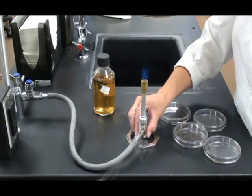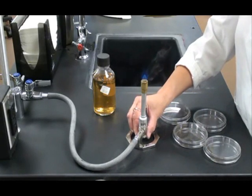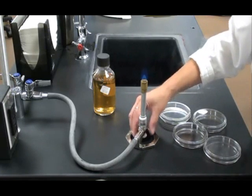I can adjust that flame with the cog at the bottom of the Bunsen burner and I want a small bright blue cone.